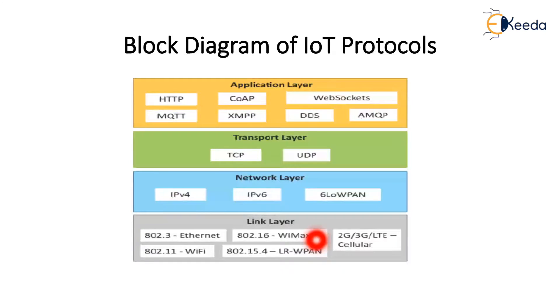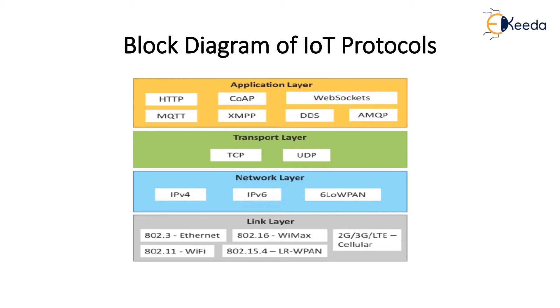There are four layers: link layer, network layer, transport layer, and application layer. These four layers follow specific protocols.